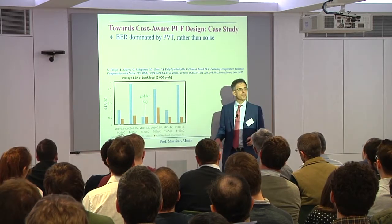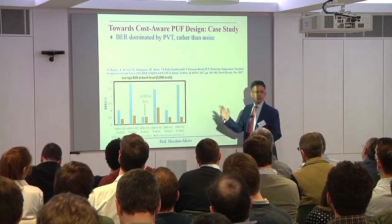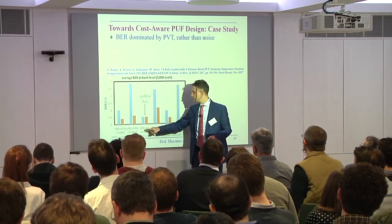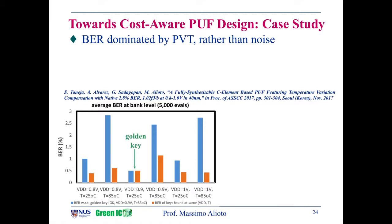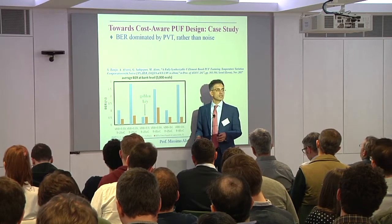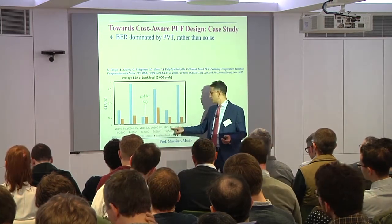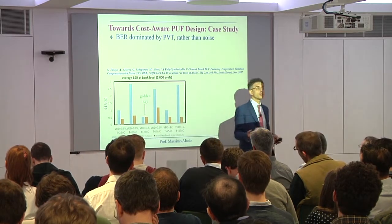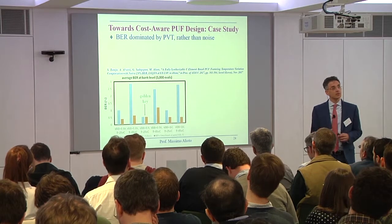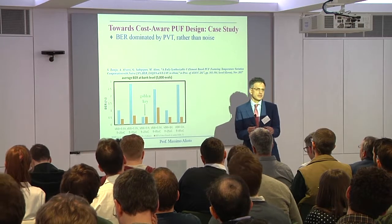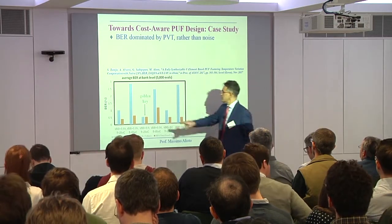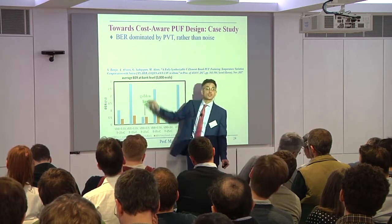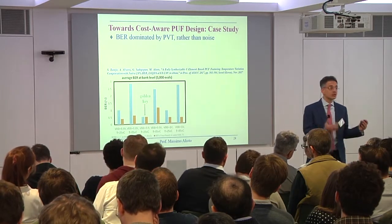We tested our PUF from a paper published about three months ago. Starting from the golden key at nominal VDD of 0.9 volts and room temperature — about 0.5% bit error rate — we then moved voltage to 0.8 and 1 volt, and temperature to 5°C and so on. What you can see is that when you move to different voltage and temperature corners, the instability goes up tremendously and very fast. This specific PUF illustrates the general point: when you change voltage and temperature corners, you must margin for a huge amount of instability that will rarely happen in real life.